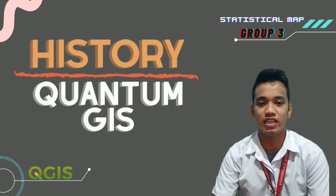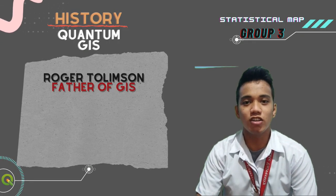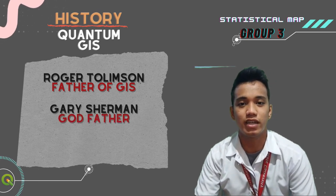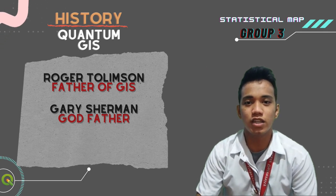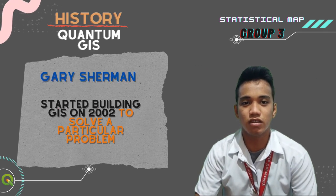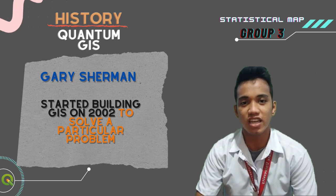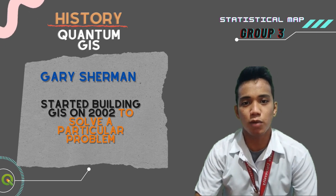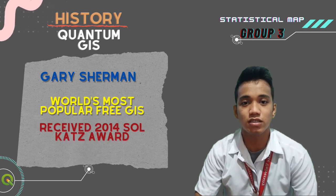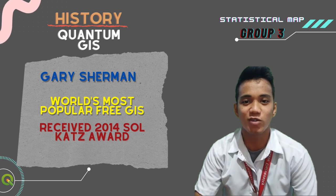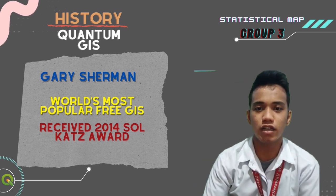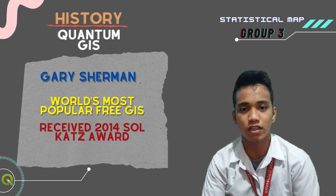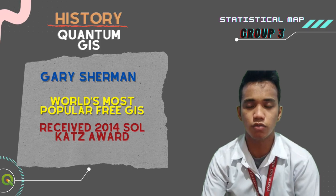My name is Brian Piuma from Group 3. A project of Limson is considered the father of GIS, but who is Gary Sherman? Gary Sherman is one of the godfathers of GIS. He founded the QGIS project in 2002. He started building GIS to solve a particular problem, and it has since grown into the world's most popular free GIS. He was looking for a geospatial data viewer that runs on Linux and supports a broad range of data sources. He received the 2014 Salkats Award at the Portland event for his work with QGIS.